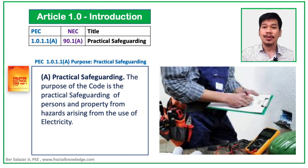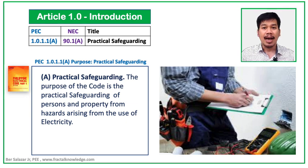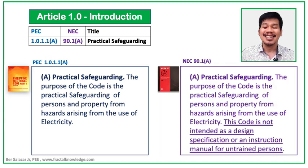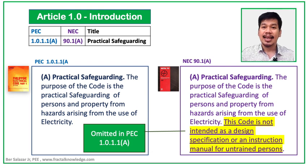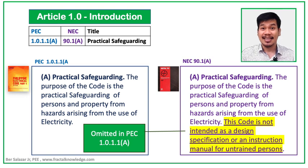Here's Section 1.0.1.1, Paragraph A, Practical Safeguarding, which states that the purpose of the Code is for the safety of persons and property from hazards contributed by the use of electricity. Similarly, NEC Section 90.1, Paragraph A, states the same. What was omitted in PEC 2017 Section 1.0.1.1, Paragraph A is the statement that the Code is not intended as a design specification or instruction manual for untrained persons. The reason is that PEC separated it into Section 1.0.1.1, Paragraph C, which we will discuss later.